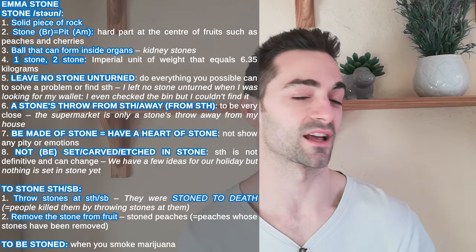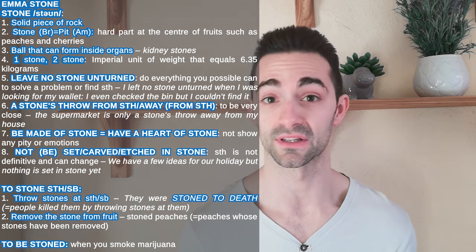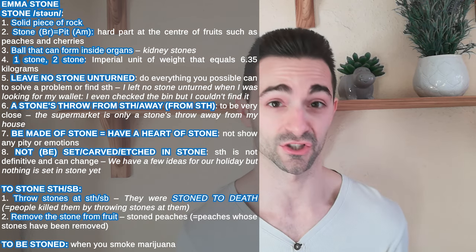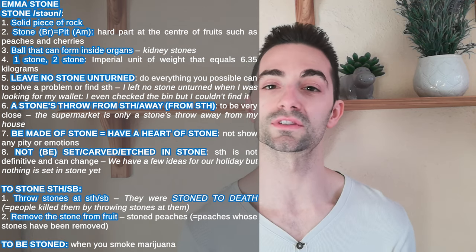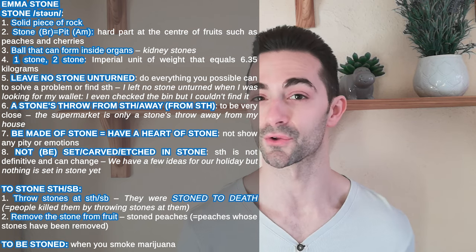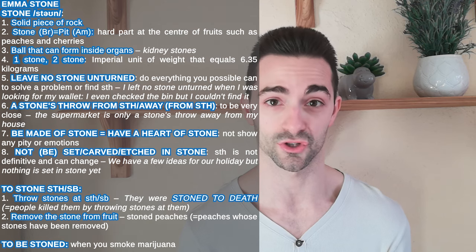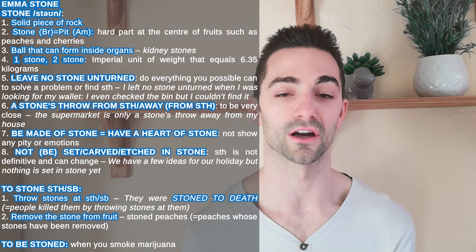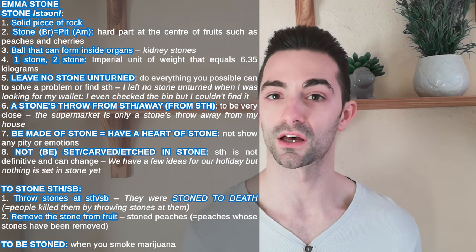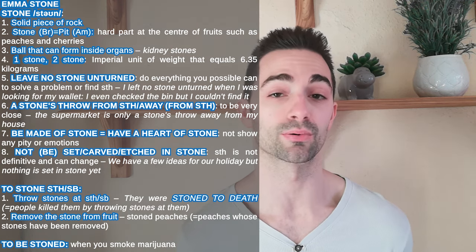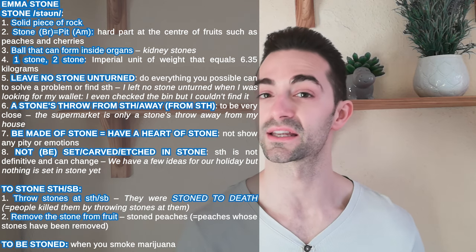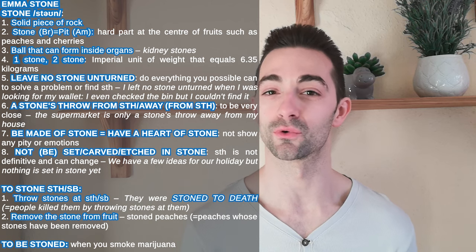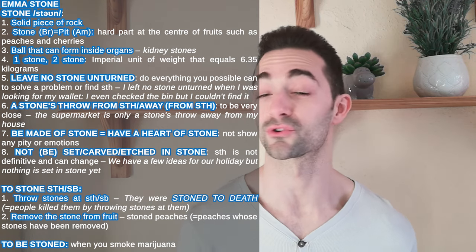And from La La Land we have Emma Stone. Stone has a lot of meanings. The most common one is a solid piece of rock. It can also be the hard part of some fruits — for example, peaches and cherries in British English; in American English they call it a pit. It can also be a ball that forms inside your organs — kidney stones, for example, are very painful and need to be removed surgically. A stone, with its plural also as stone, is an imperial unit of weight equal to 6.35 kilograms. 'To leave no stone unturned' means to do everything you possibly can to solve a problem or find something. 'A stone's throw away' means very close. If you are made of stone or have a heart of stone, it means you have no emotions or you don't show them.